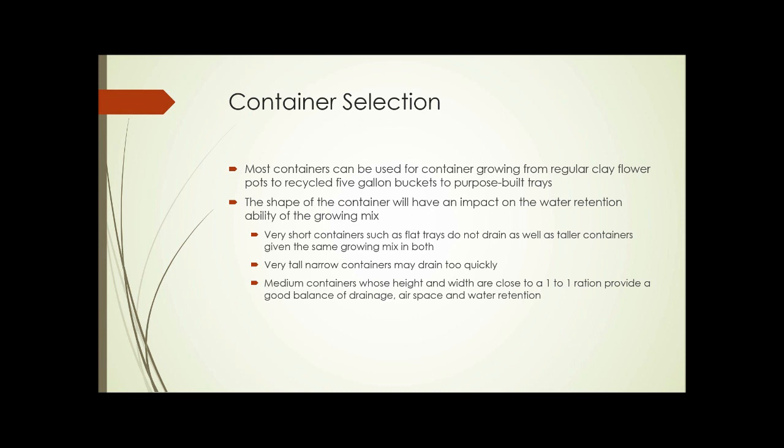Container selection. Most containers can be used for container growing, from regular clay flower pots to recycled five-gallon buckets to purpose-built trays. However, the shape of the container will have an impact on the water retention ability of the growing mix. Very short containers, such as flat trays, don't drain as well as taller containers, given the same growing mix in both.